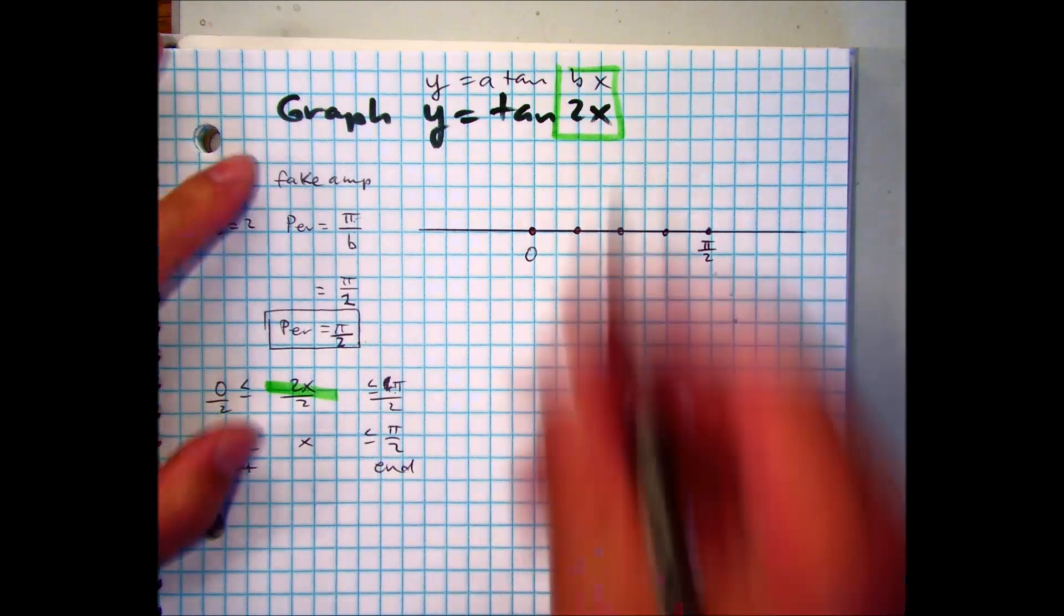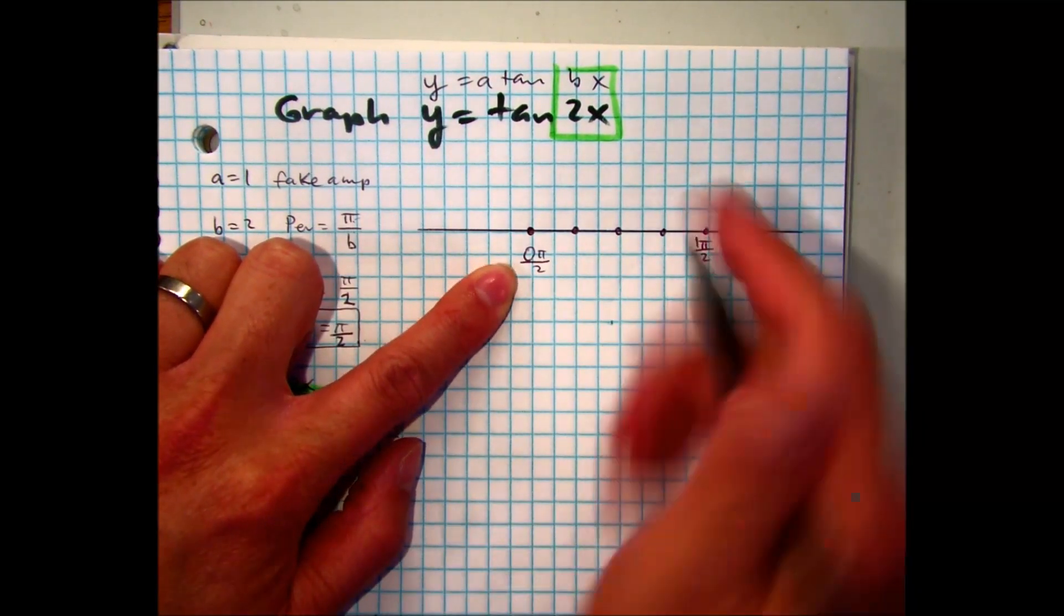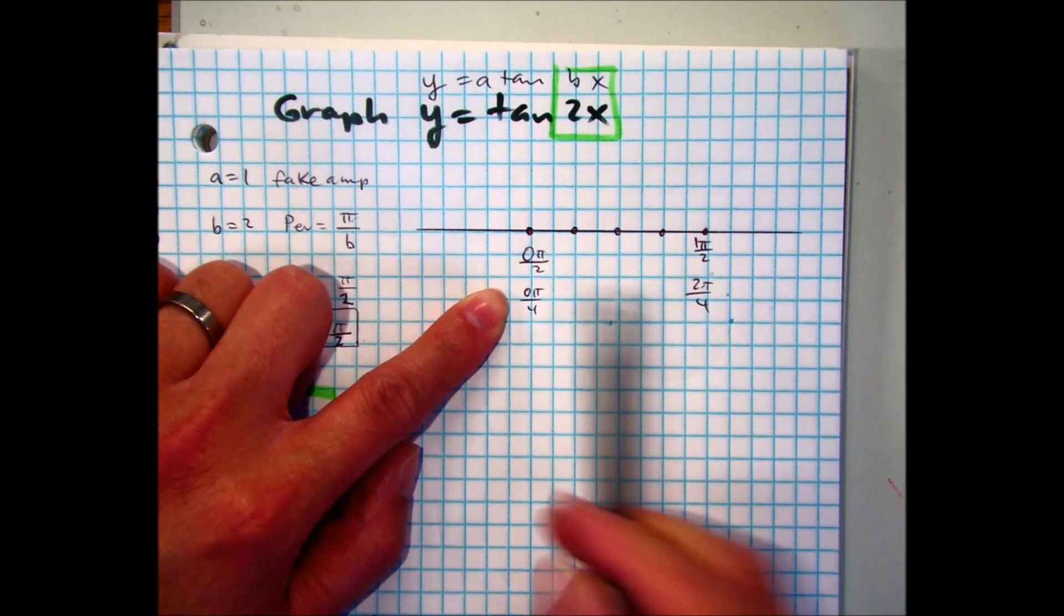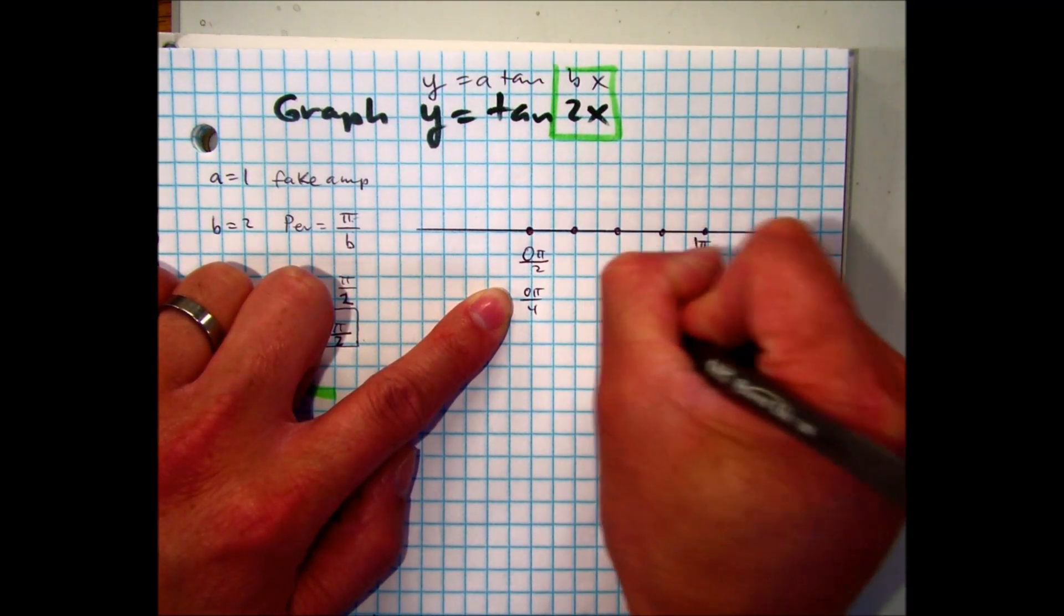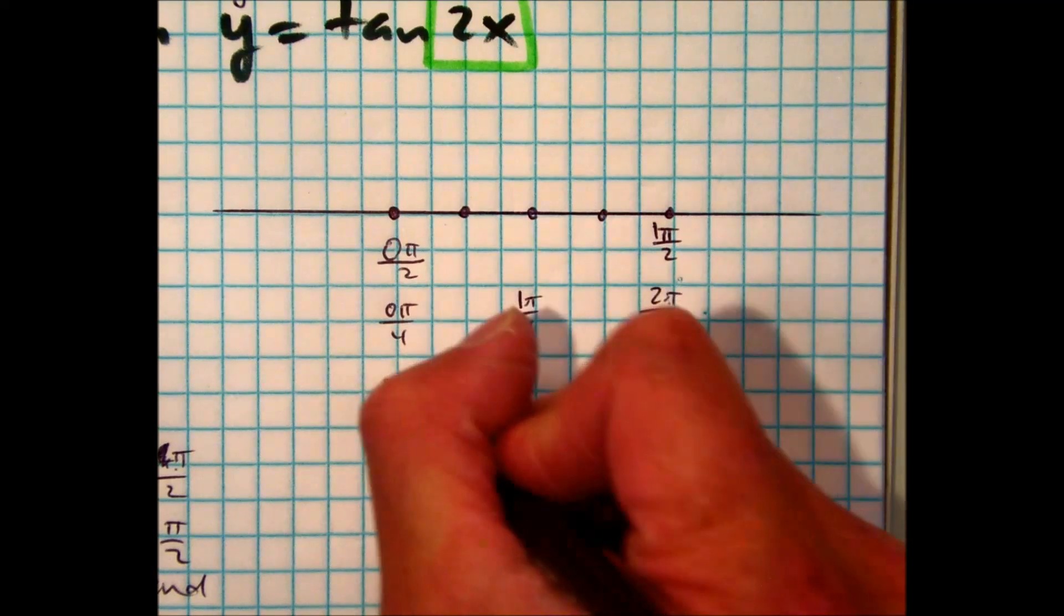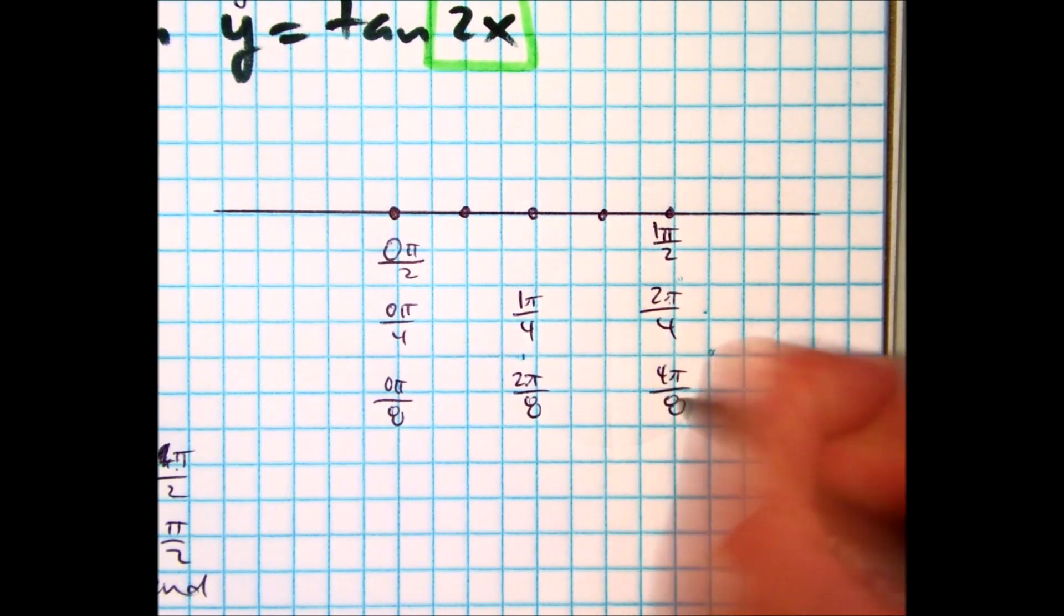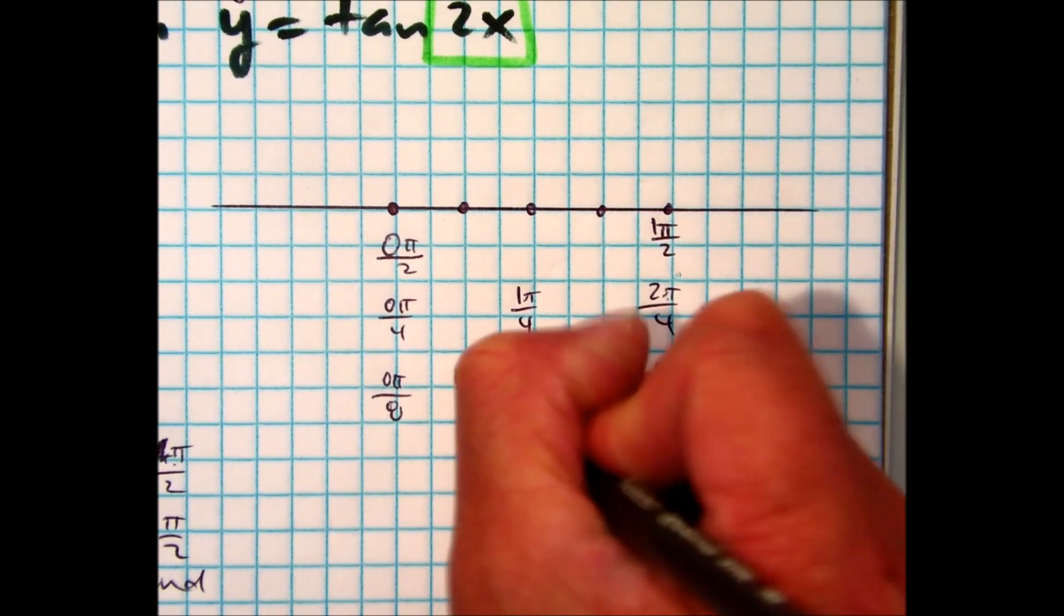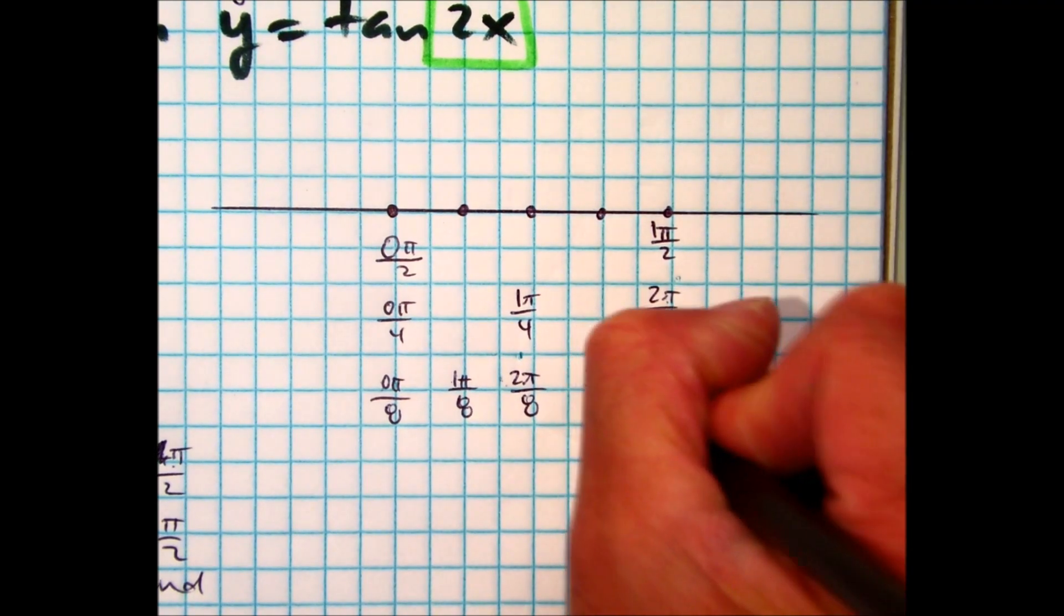Remember, if it helps you, you can double these. So here, I have 0 pi over 2 and 1 pi over 2. So we can call it 0 pi over 4 and 2 pi over 4. And the reason why I did that is we can do 0 plus 2 divided by 2, so 1 pi over 4. If you're still stuck, you can always, again, just double them. So I have 0 pi over 8, 2 pi over 8, and 4 pi over 8. Plus 0 plus 2 divided by 2, so 1 pi over 8. 0, 1, 2, and this one is 3 pi over 8.